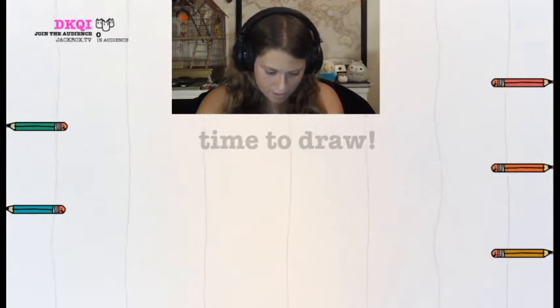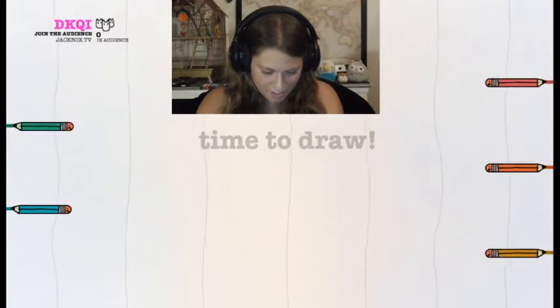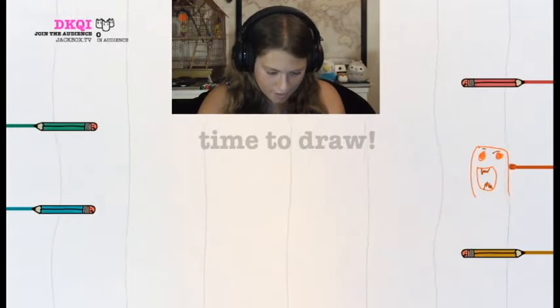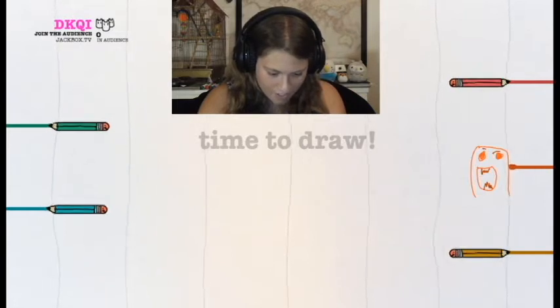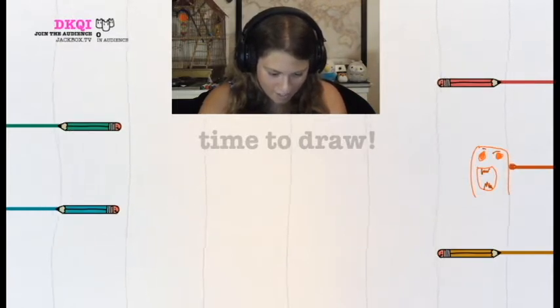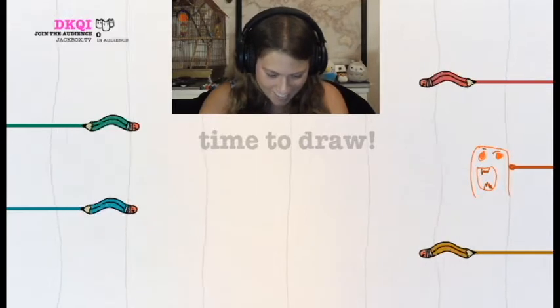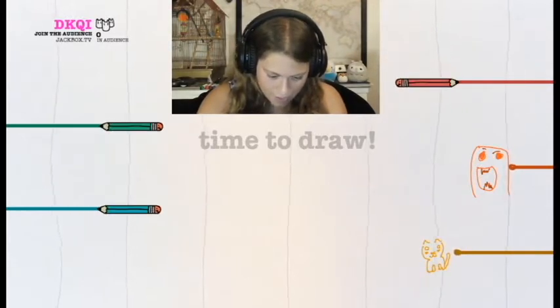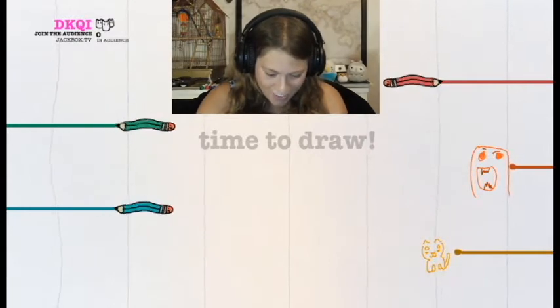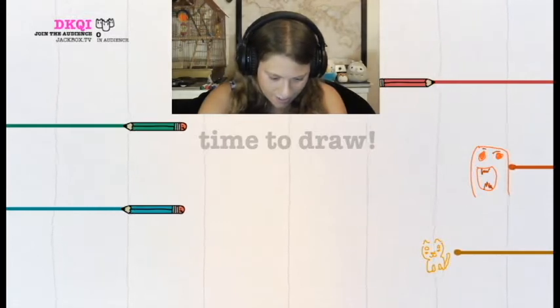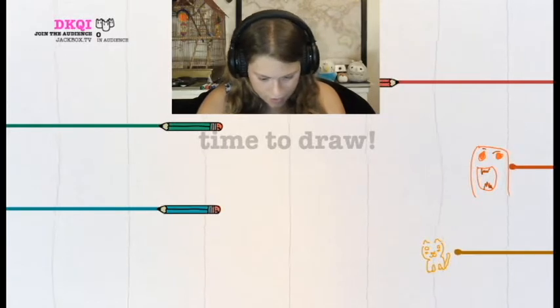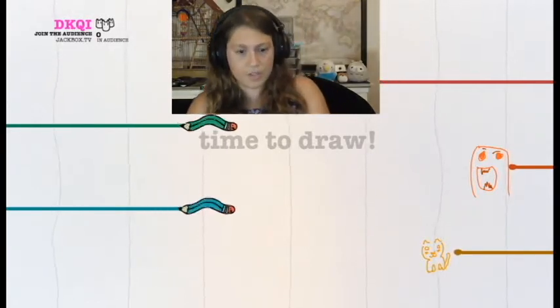Welcome to Drawful. I see there are five players. I've sent a prompt to each of your devices. Stuff that's kind of hard to draw. Like, Electric Broom or some dude's name is probably Chad. Yeah, we're starting. Draw a picture on your device. You'll get points for each player that can correctly guess your title.